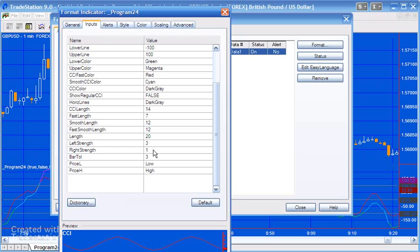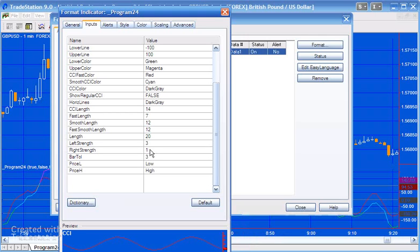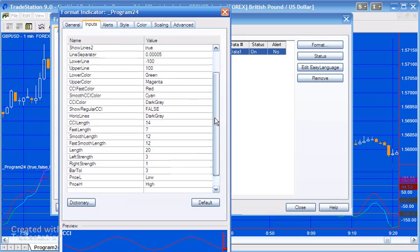LeftStrength, RightStrength are determining the strength of pivots both on CCI and price. In other words, LeftStrength 3 means they have to be, for a high pivot, three bars lower than the high pivot on the left of the bar. And RightStrength means there has to be at least one bar to the right of the pivot for it to be considered a pivot.